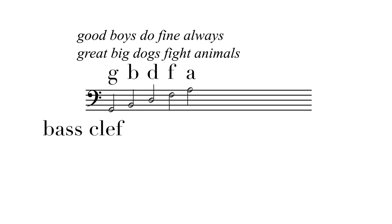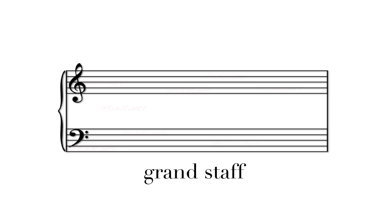The spaces for the bass clef are A, C, E, G — or "all cows eat grass." When the treble clef and the bass clef are written together, connected by a bracket, it's known as the grand staff. This is used almost exclusively for keyboard instruments such as organ, piano, or harpsichord.